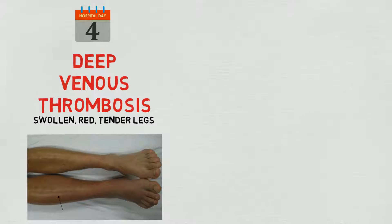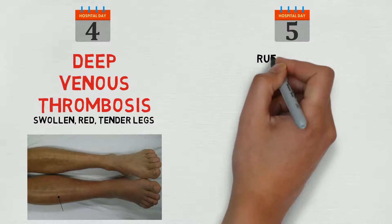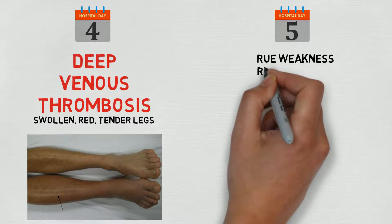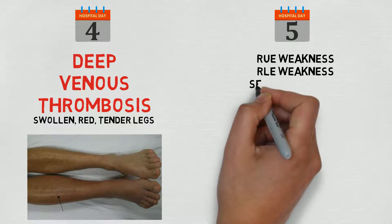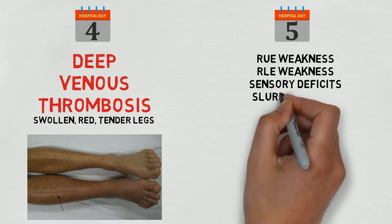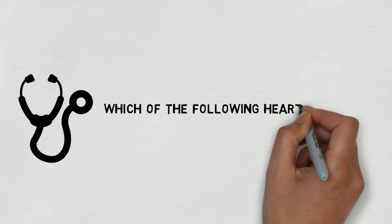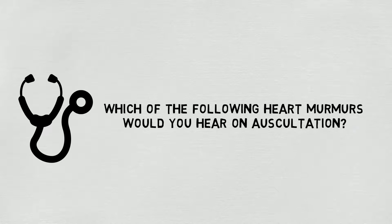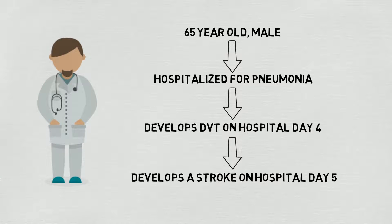On day five, you notice he has right upper extremity weakness, right lower extremity weakness, some sensory deficits, and slurred speech. They then ask you: which of the following heart murmurs would you hear on auscultation? You need to connect the dots — a 65-year-old with pneumonia, DVTs, and now what looks like a stroke. How do you get a stroke from a DVT, and what type of heart murmur would you hear?